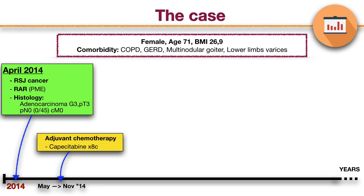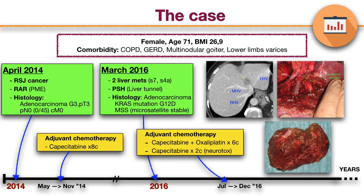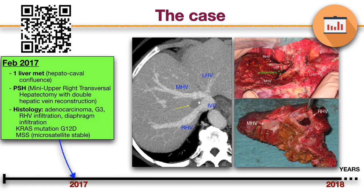The case is about a 71-year-old female patient who underwent laparoscopic resection and adjuvant chemotherapy for adenocarcinoma of the rectosigmoid junction in April 2014. Two years later, two metastases respectively at segments 7 and 4a were treated with a liver resection and post-operative chemotherapy. In February 2017, another metastasis appeared at the hepato-cavoatrial confluence between the middle and right hepatic veins.